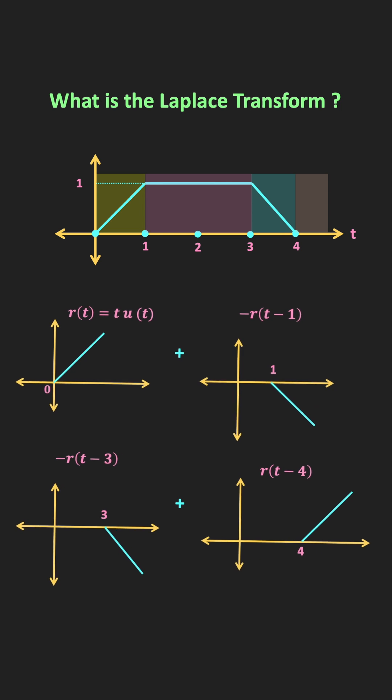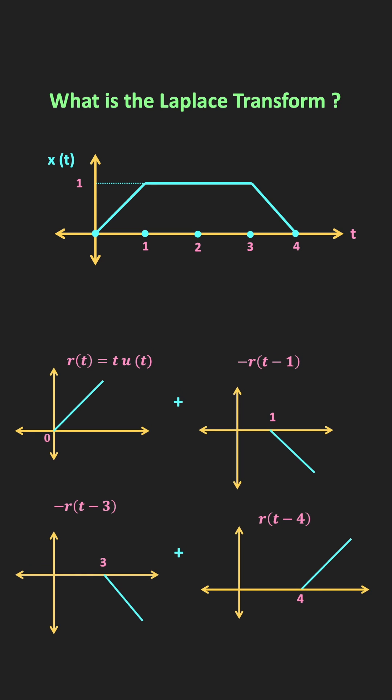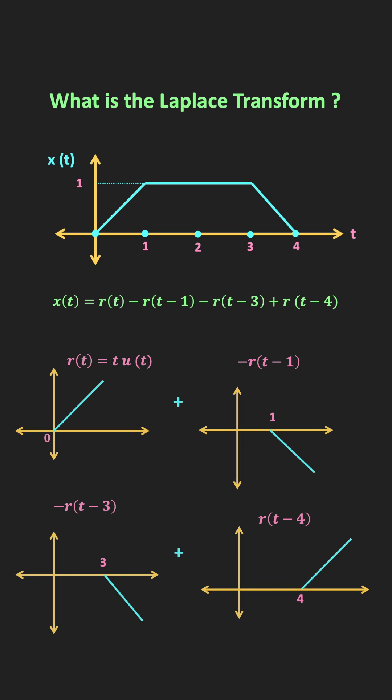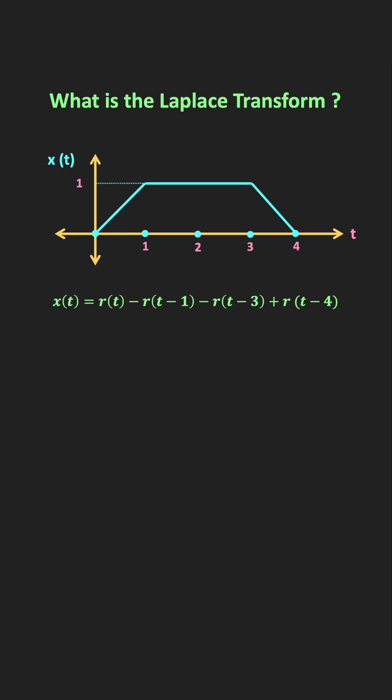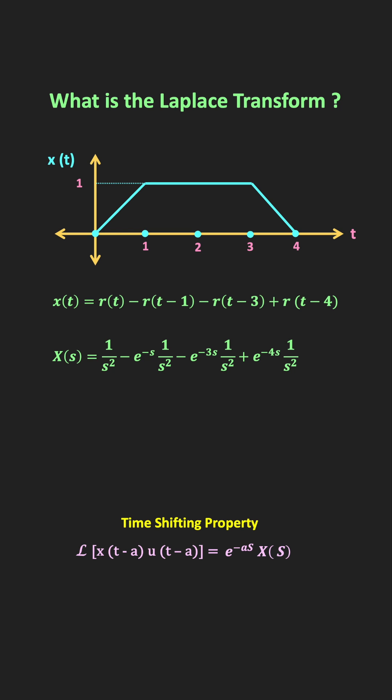So by adding these four ramp functions, we will get the mathematical expression of this trapezoidal function. If this trapezoidal function is equal to x, then x can be given by the summation of these four functions. Now if we take the Laplace transform of x, it can be given by this expression. As you know, the Laplace transform of the ramp function is equal to 1 divided by s squared. And using the time-shifting property, we can say that this R is equal to e to the power minus s divided by s squared.